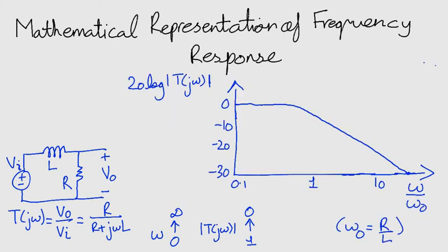This is called a Bode plot and it shows that the gain falls off as frequency increases. This is an example of a low-pass network or a low-pass filter.